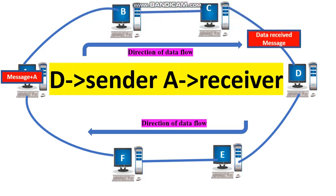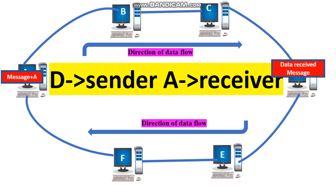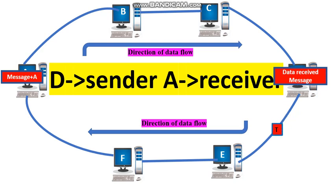Here, D is the source, so when the token is received by D, it empties the token. The empty token now changes to circulation mode, and then the above process continues.